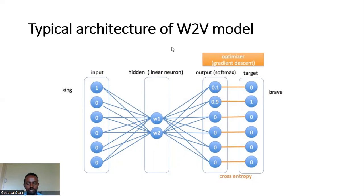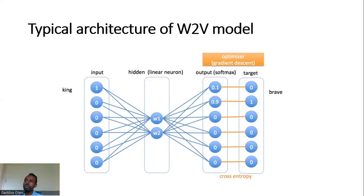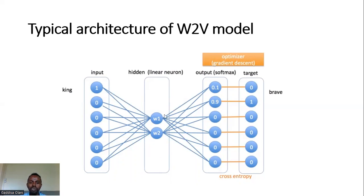The neural network takes an input and predicts directly, extracting a target vector from the weight matrix.